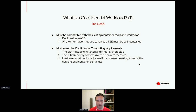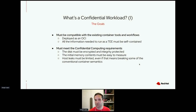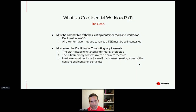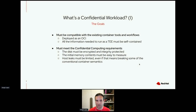On the other hand, we also must meet the confidential computing requirements — otherwise it would be pointless. This means the disk must be encrypted and integrity protected; there is no use in having RAM that is encrypted and integrity protected if the storage is not protected. We also need the memory contents to be easy to measure — in this design that's easy because all the components we need to measure are provided by libkrun itself. Another requirement is that host leaks must be limited, even if that means breaking some conventional container semantics. In practice this means we cannot support things such as volume mapping or running podman exec inside a confidential workload, because that would break the isolation needed to provide the confidential computing guarantees.